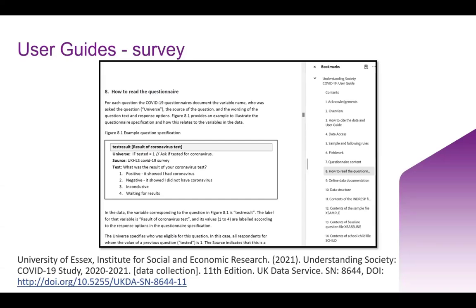While collections curated by the UK Data Archive would have this as a single user guide, you're more likely to see a folder of documents or separate files on collections that are deposited by researchers themselves through our system called ReShare. This user guide is an example of a survey, and those bookmarks basically act as a map to talk you through the preparation and delivery of the survey, as well as any other information that you might need to know. There's further information in this user guide about the sample, about the questionnaire, about the data structure, and there's even a bit on how to cite the user guide as well.